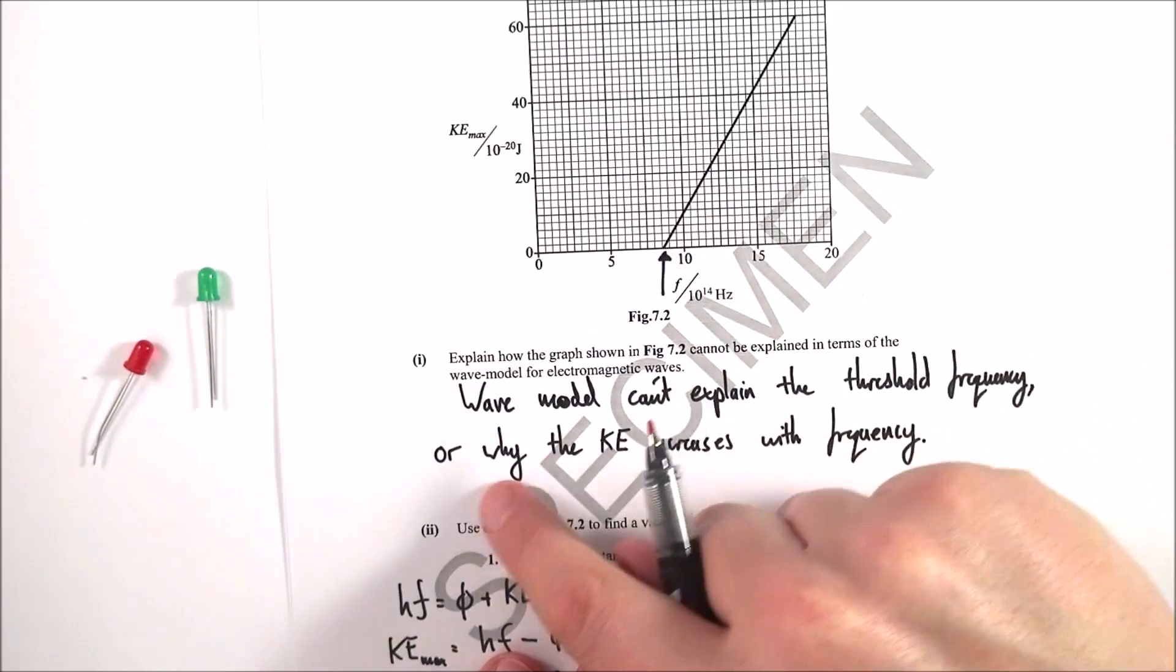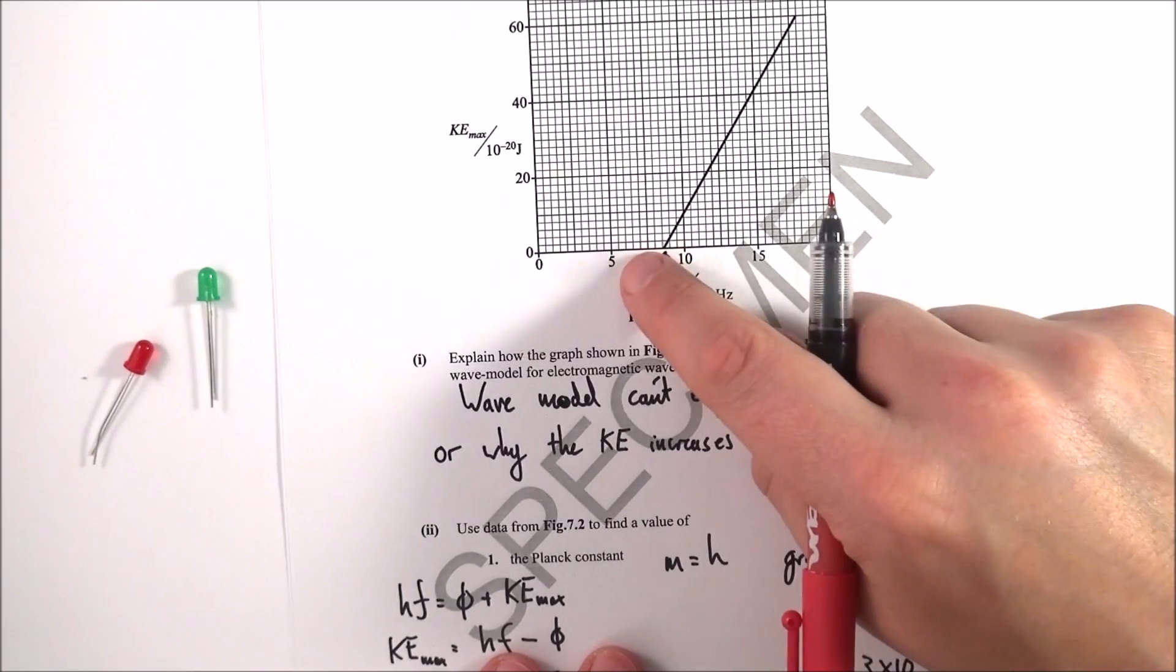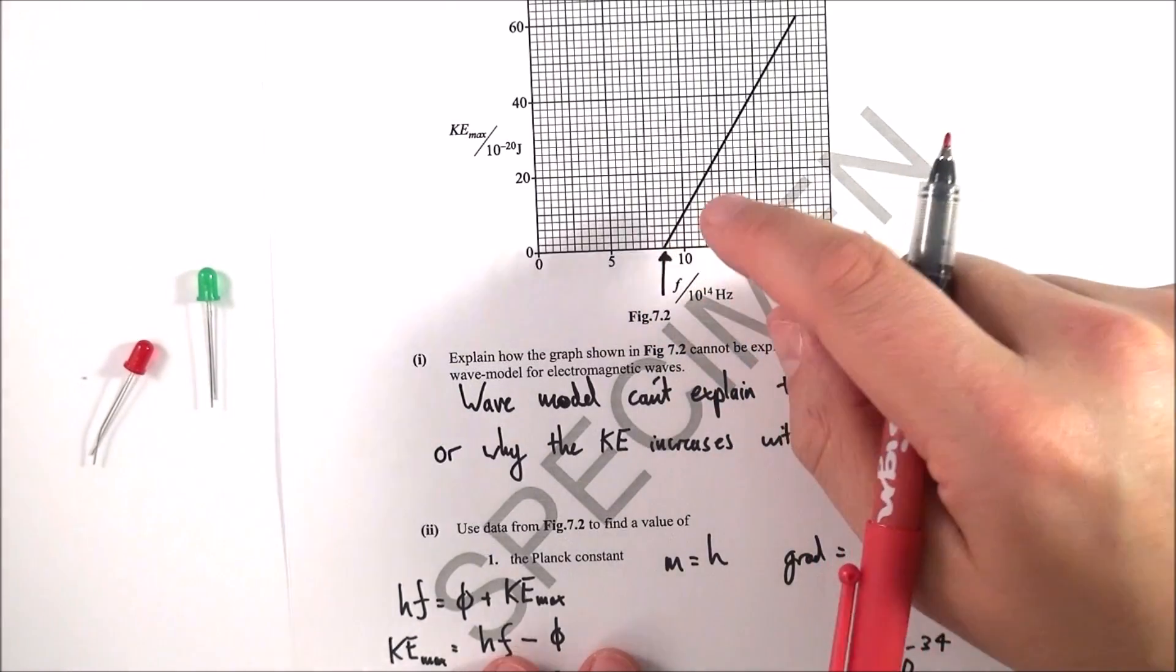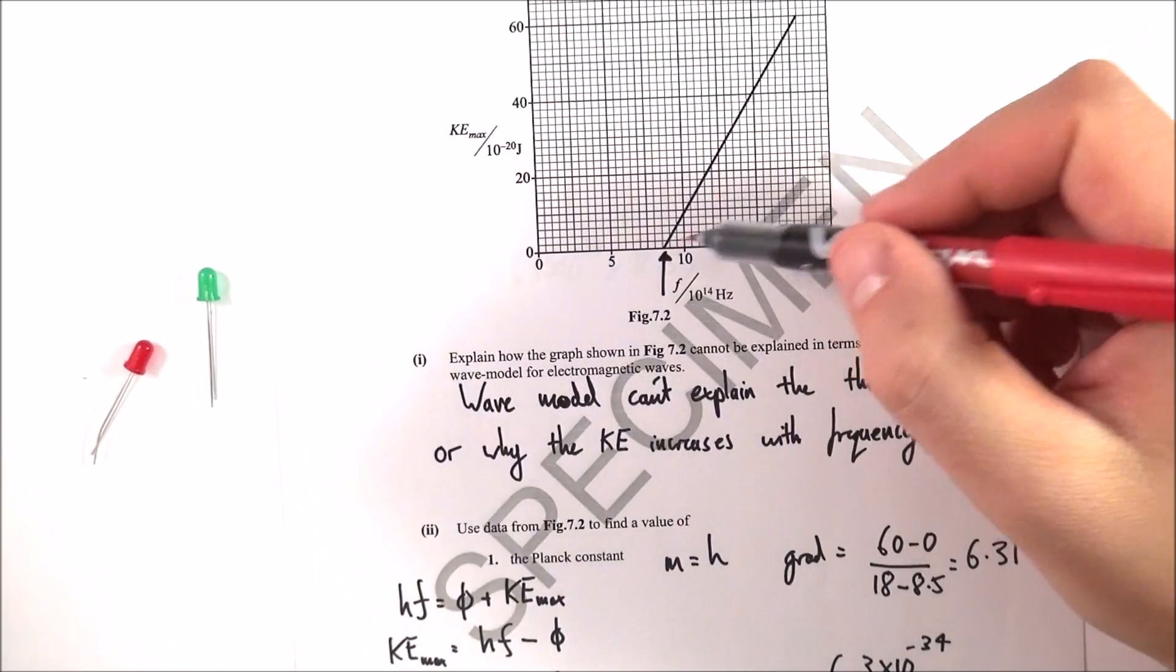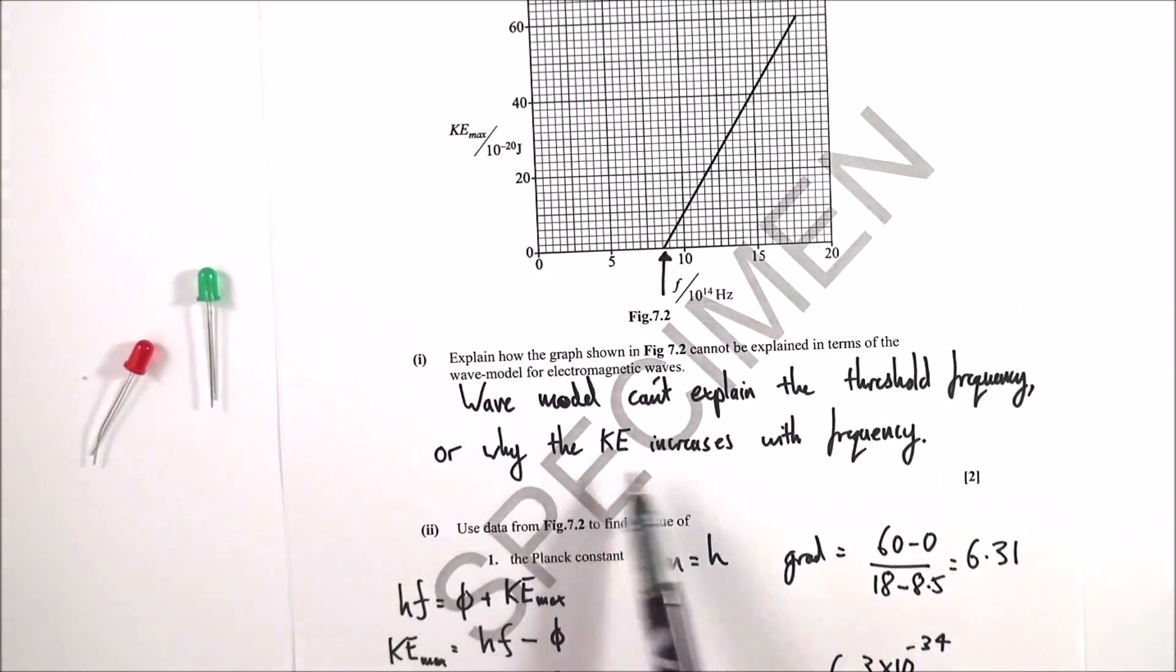The other thing it can't explain is why the kinetic energy increases with frequency. It should mean that the kinetic energy would really depend on the intensity of light, not on that. So the kinetic energy increasing with frequency is our second bit of evidence.